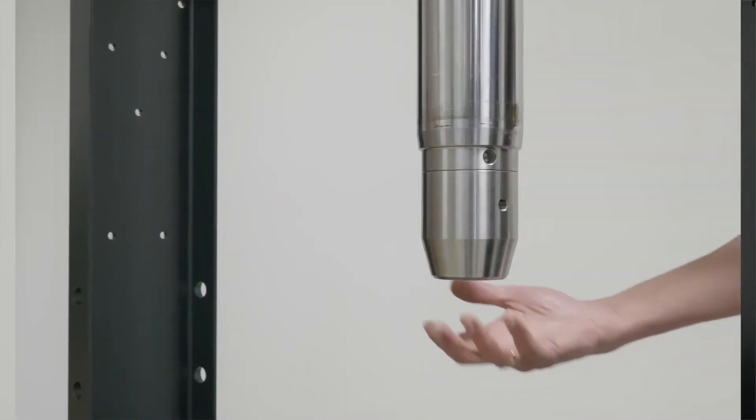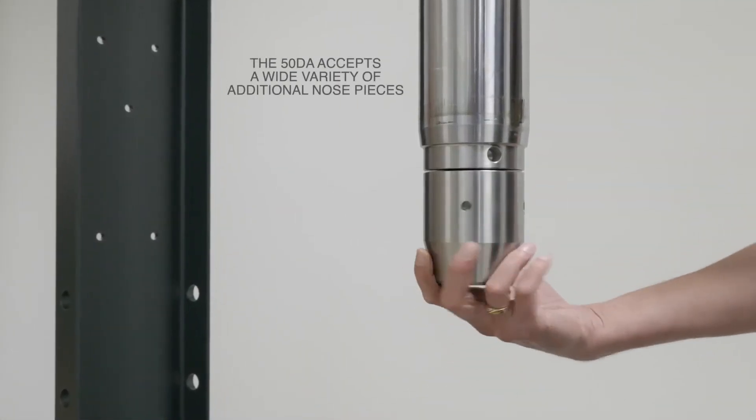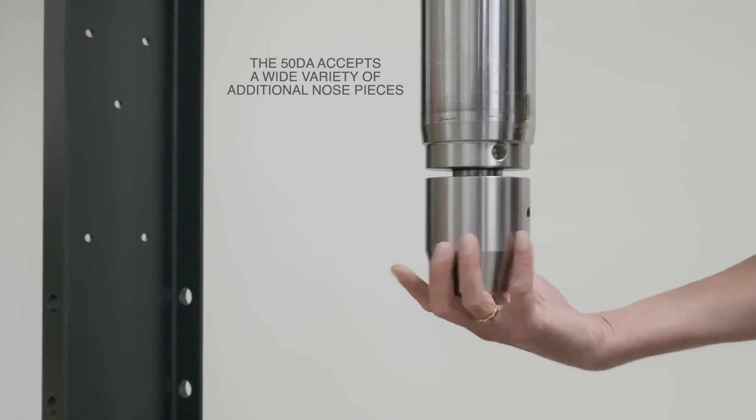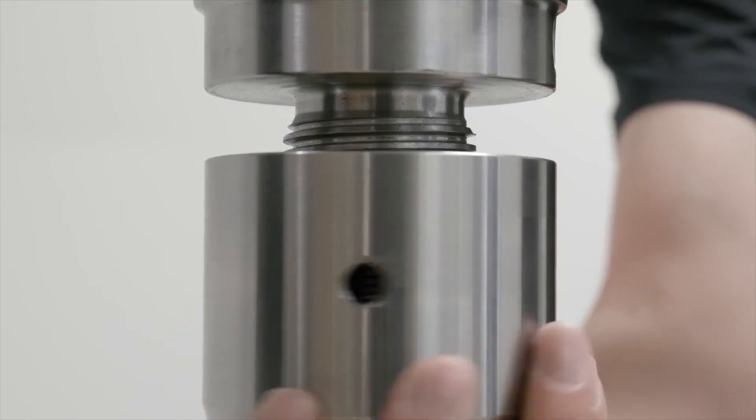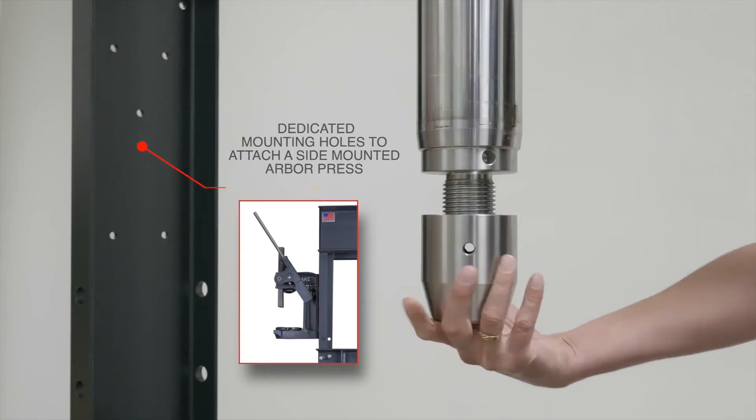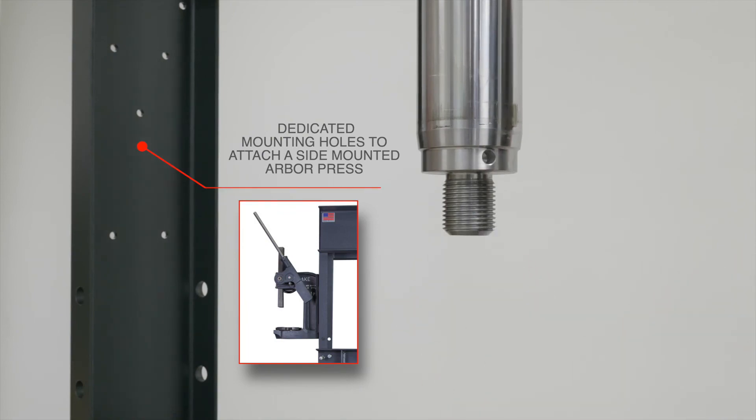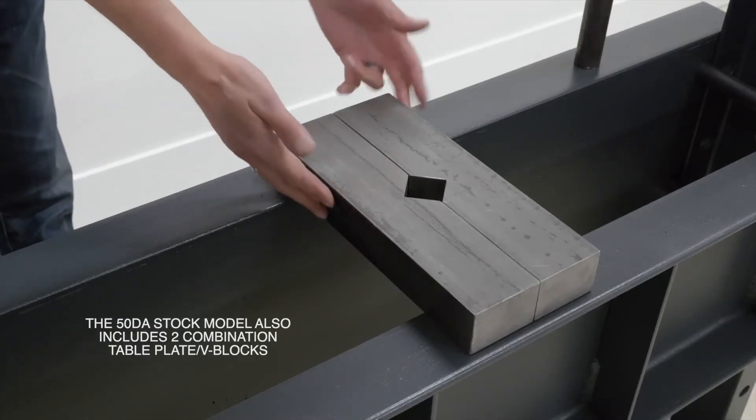The 50DA also accepts a wide variety of additional nose pieces. It also has dedicated mounting holes to attach a side mounted arbor press, and it includes two combination table plate V-blocks.